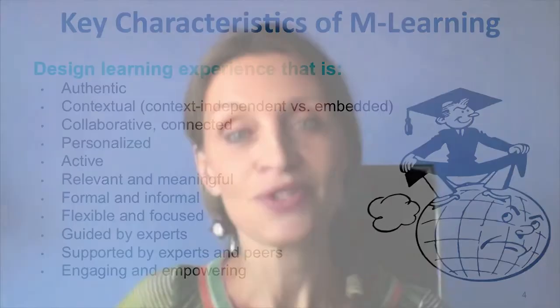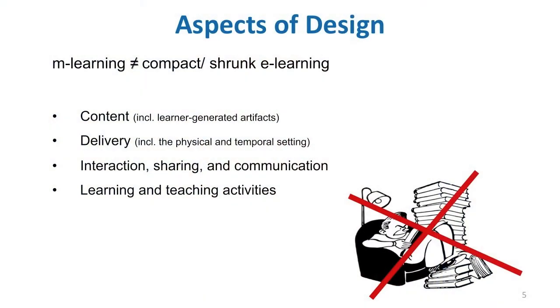Mobile learning is unique. Mobile learning is not just compact, shrunk, reduced-in-size e-learning. Mobile learning has its unique affordances, challenges, limitations, and capabilities. When designing for mobile learning, keep that in mind and look very carefully at these four aspects: the content, the delivery methods and tools, interaction sharing and communication methods, as well as the design of learning and teaching activities.